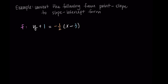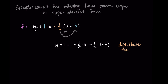Starting with f, we have y plus 1 is equal to negative one-half times the quantity x minus 3. We want to get this into y equals mx plus b form. The first thing I'm going to do is distribute the slope, so negative one-half gets multiplied by x and negative 3. So on the right-hand side I have negative one-half times x minus one-half times negative 3. Simplifying, that gives y plus 1 equals negative one-half x plus three-halves, since negative one-half times negative 3 becomes positive three-halves.